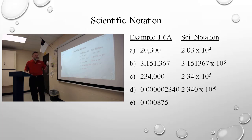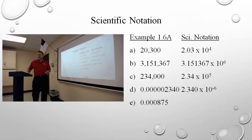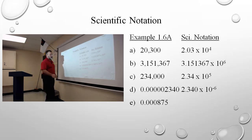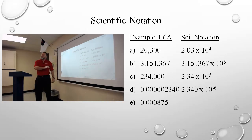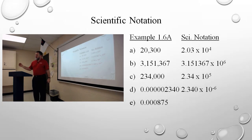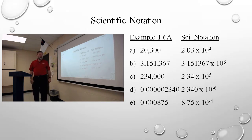The significant digits in this number, hopefully you see this now, are the 875. Meaning my scientific notation has to be in the form of 8.75 times something. 8.75 times ten to the — I have to move the decimal one, two, three, four places smaller. So times ten to the zero minus four makes it times ten to the negative fourth. 8.75 times ten to the negative fourth.